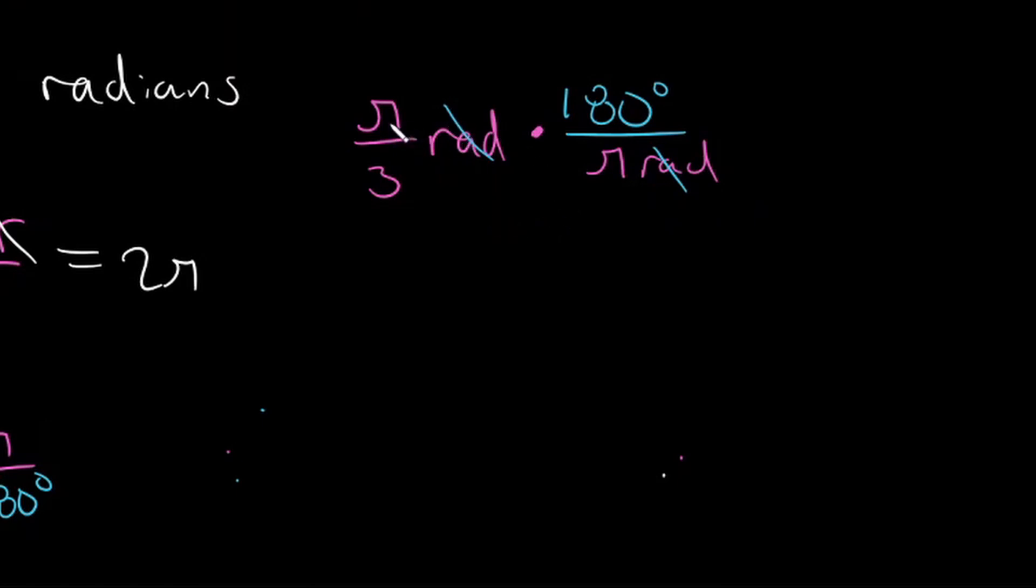So we also have a pi in the numerator here and a pi in the denominator here, so we can just cancel those as well. And so we will be left with 180 divided by 3, and that's going to be equal to 60. So our answer would be 60 degrees. So pi over 3 radians is equal to 60 degrees.